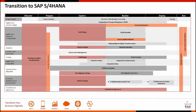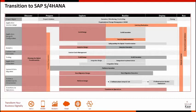What are the work streams that we have? Project management, application solution adoption, application design and configuration, analytics, custom code extensions, testing, application integration, system and data migration, technical architecture and infrastructure, and transition to operations — because that's what you need once you have converted. Let's mention the main activities in each of these work streams.